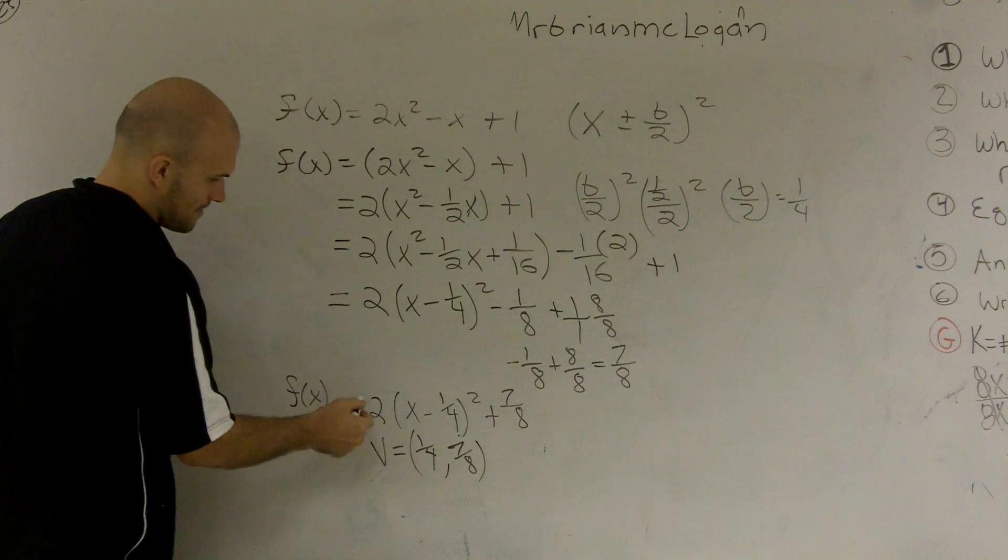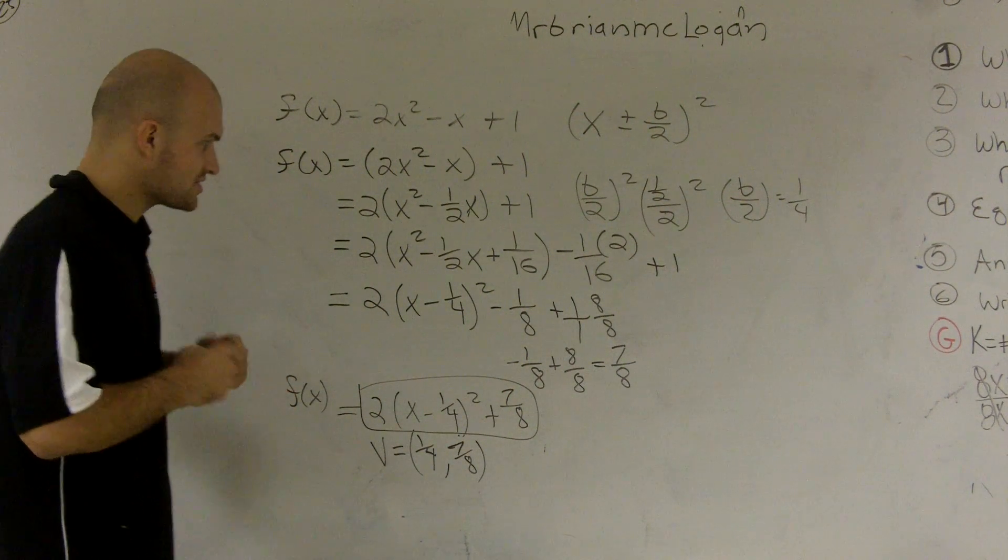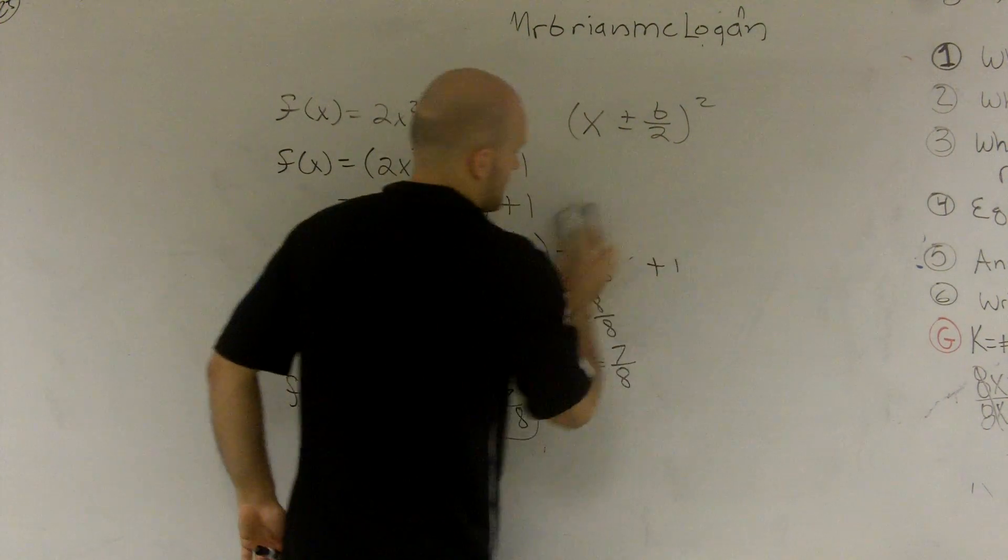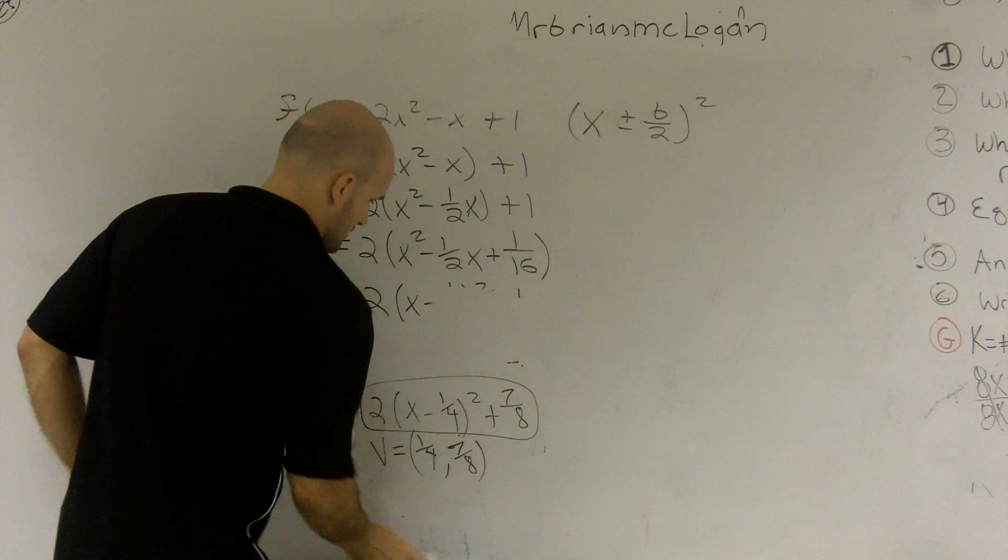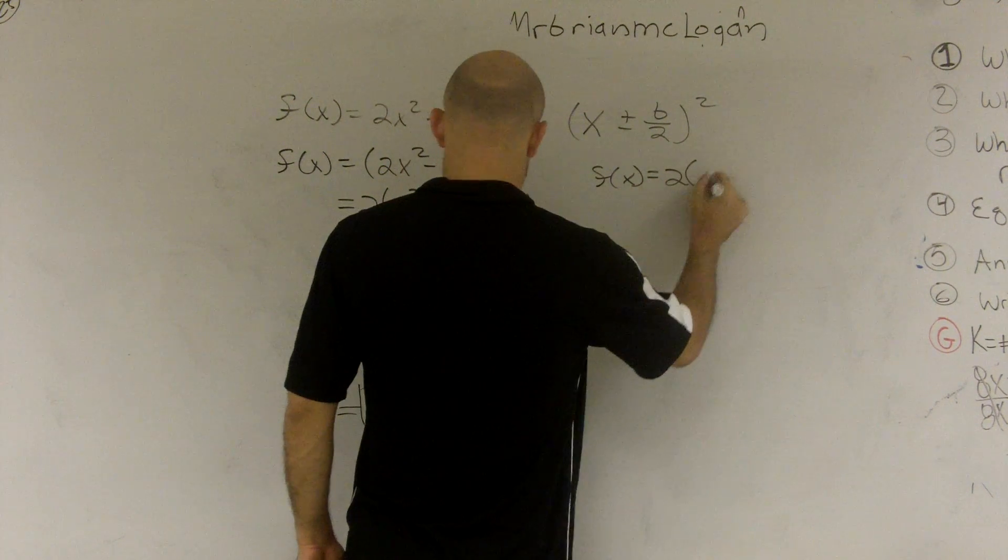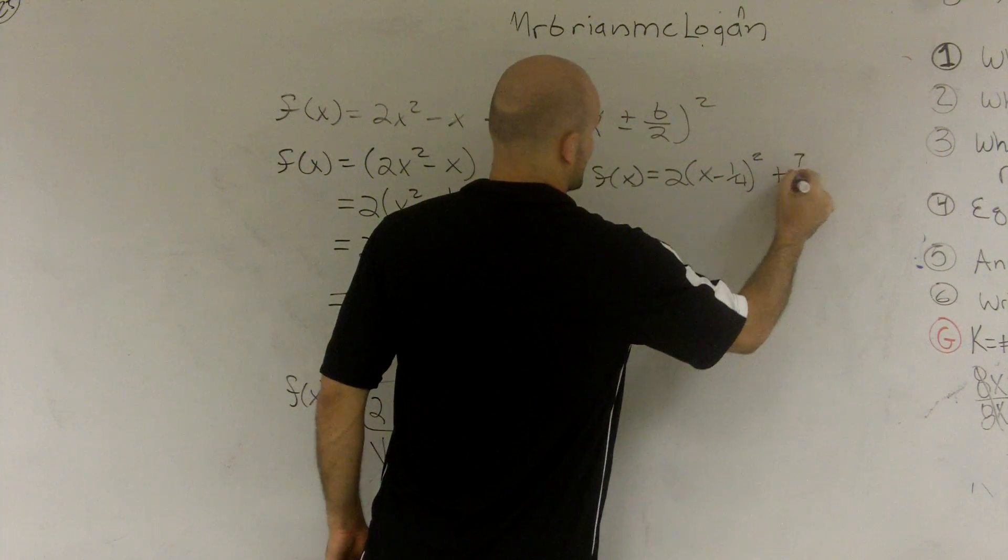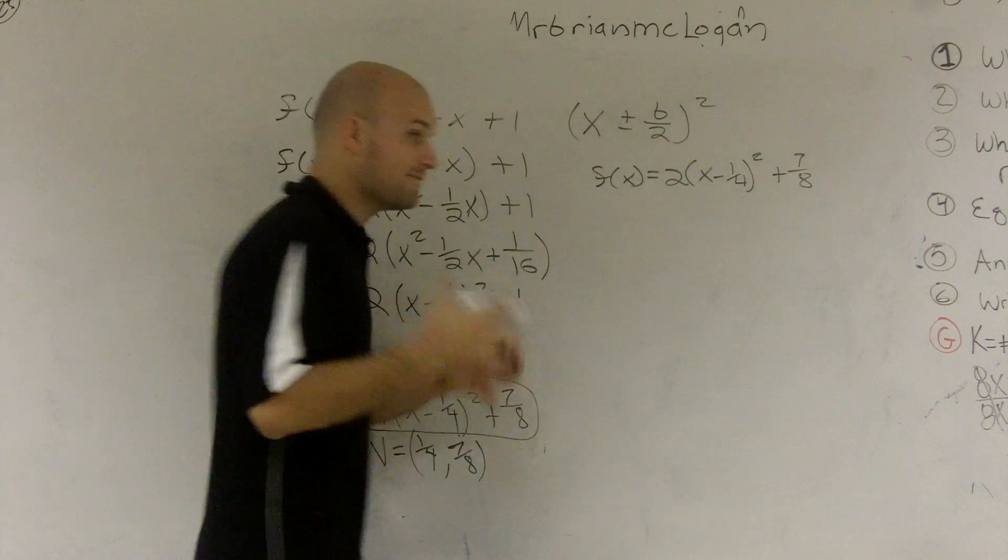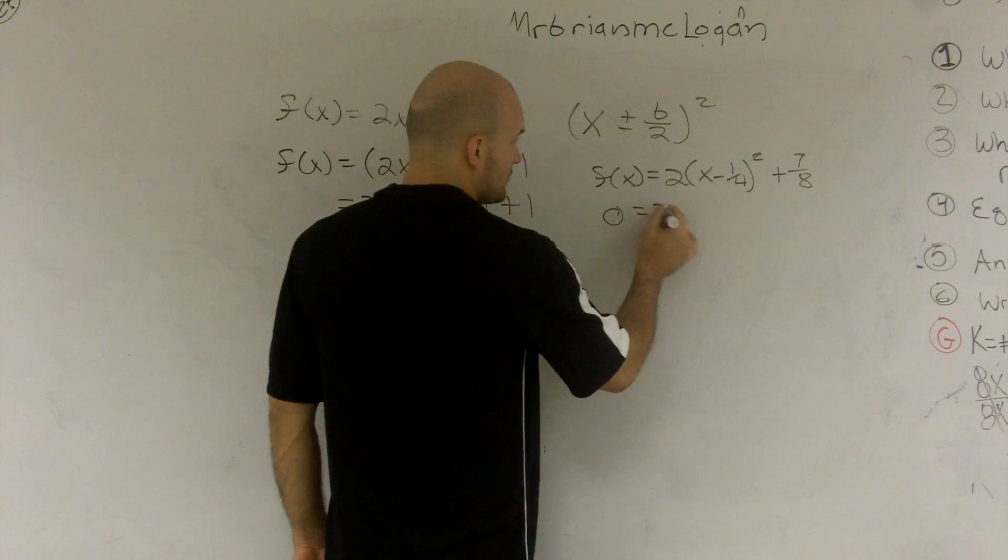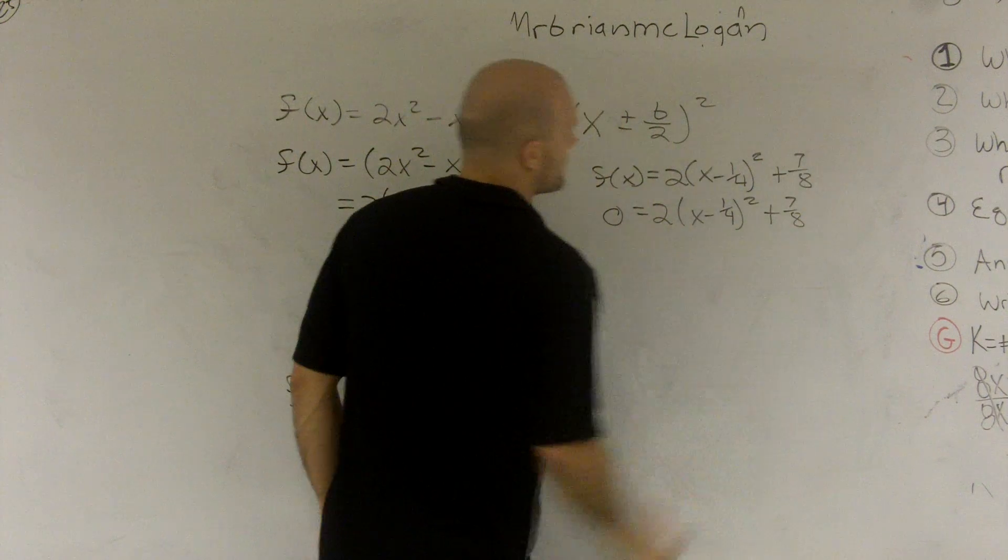So here's my function. So I wanted to solve, let's say I wanted to find the solutions. So I have f of x equals 2 times x minus 1 fourth squared plus 7 eighths. If I want to find the solutions, find the zeros, you need to make this zero.